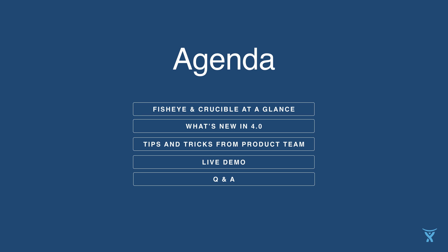Let's look at today's plan. We'll start with the basic overview of Fisheye & Crucible tools and why it's awesome. Then we are going to cover the 4.0 release and all the updates and new features we prepared. Then a small surprise from our development team — engineers listed their top tips and tricks on how to code search and code review like a boss. And then comes live demo and Q&A session. I will try to make it in 30 minutes, so make yourself comfortable and enjoy.